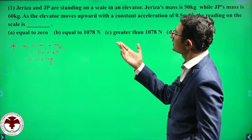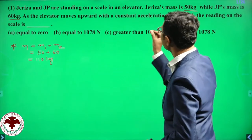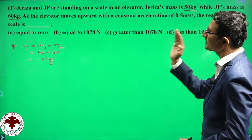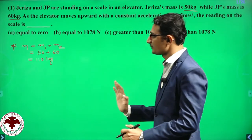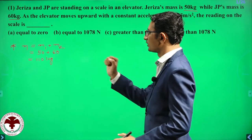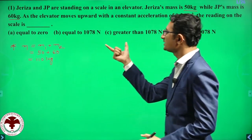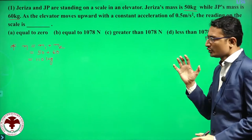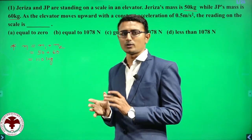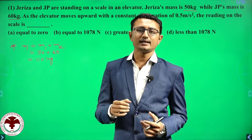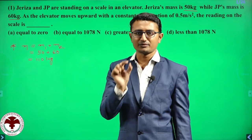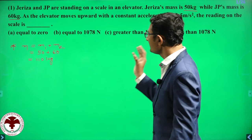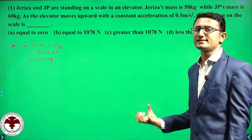Now, as the elevator moves upward with a constant acceleration of 0.5 meter per second squared, the reading on the scale is — look at the options: equal to 0, equal to 1078, greater than 1078, or less than 1078. They are not demanding a perfect numerical answer; this is conceptual.